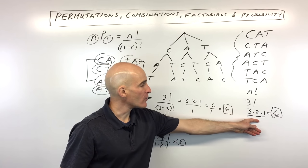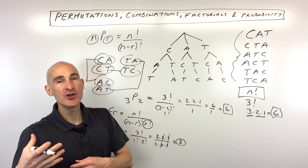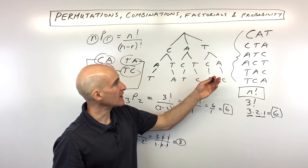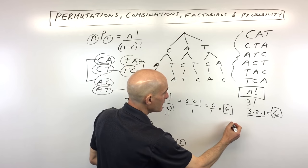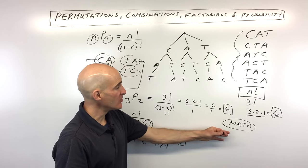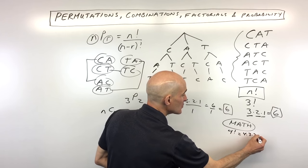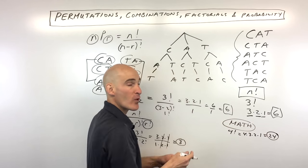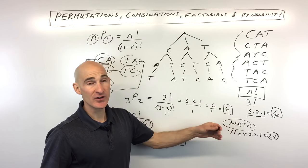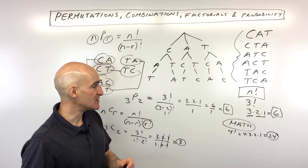Going back to the n factorial formula: it represents how many ways to arrange all N items. For example, with the word MATH — M-A-T-H — there are four letters, so we say four factorial. That's four times three times two times one, which means there are 24 different ways to use all four letters and rearrange them into a different ordering.